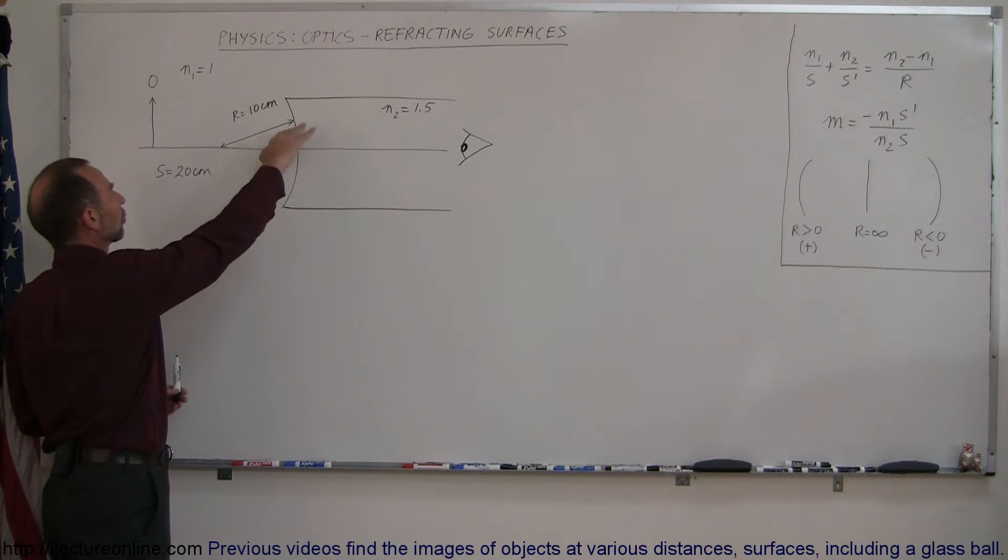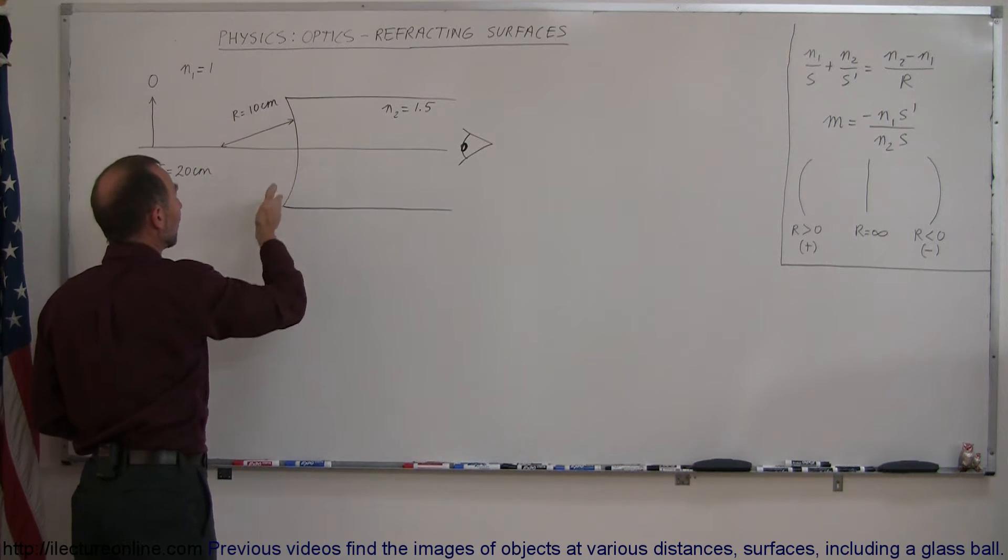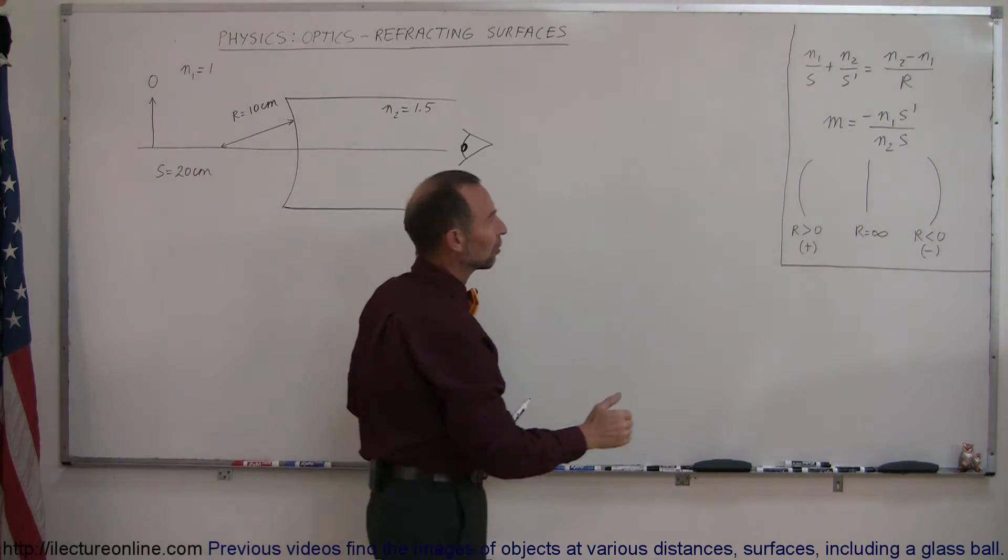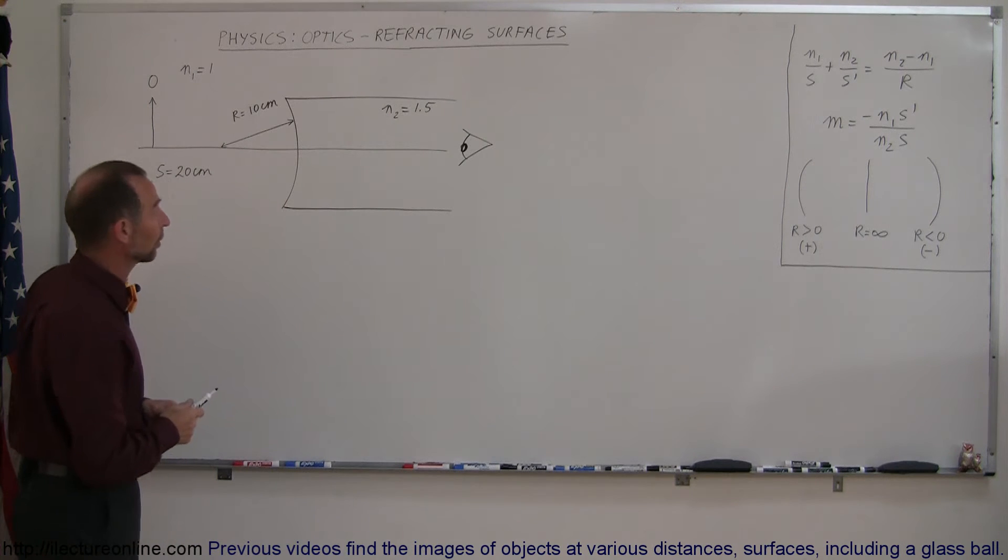The radius of curvature is 10 centimeters, but notice that it is bent towards the observer. And when it's bent towards the observer, we must have the radius of curvature as a negative number.